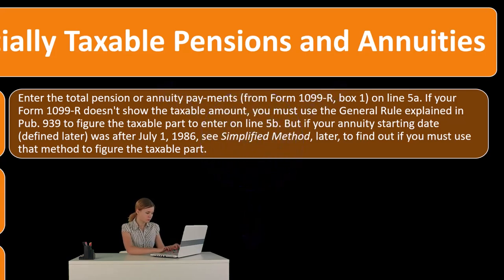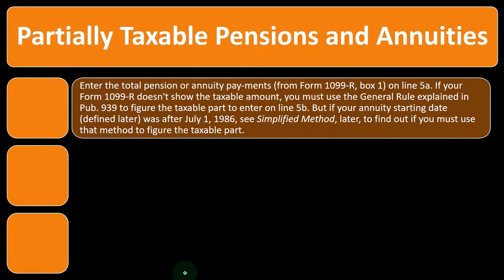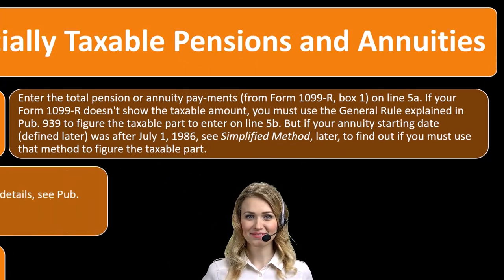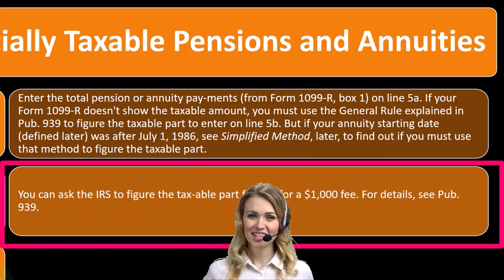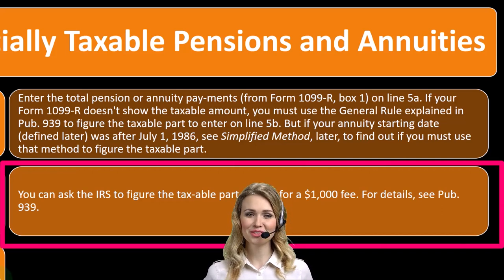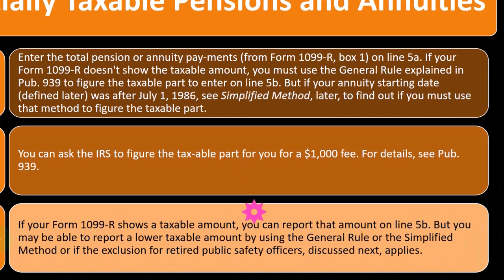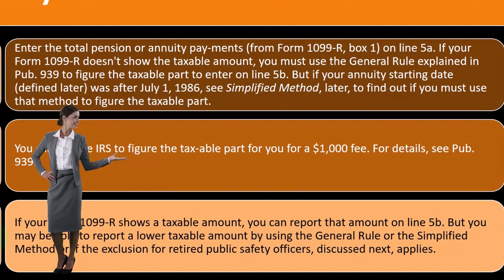If your annuity starting date was after July 1st, 1986, see the Simplified Method to find out if you must use that method to figure the taxable part. You can also ask the IRS to figure the taxable part for you for a one thousand dollar fee — though that may not be worth it. See Publication 939 for details. If Form 1099-R shows a taxable amount, you can report that on line 5b, but you may be able to report a lower taxable amount using the General Rule or the Simplified Method.